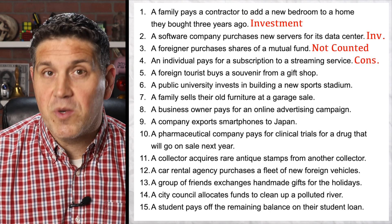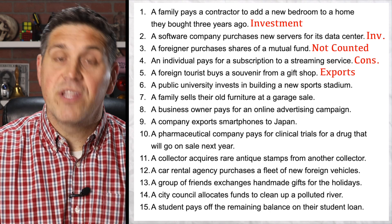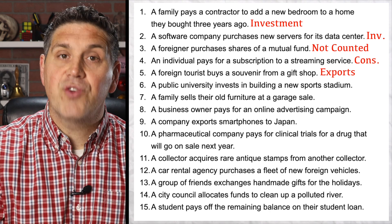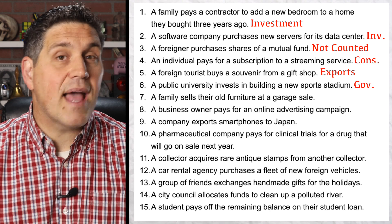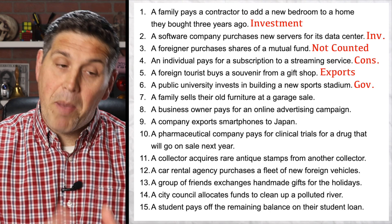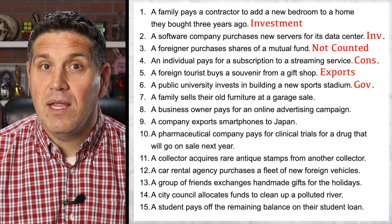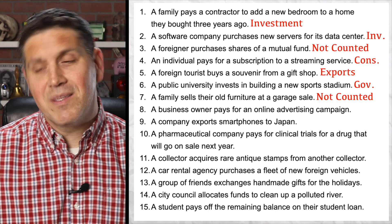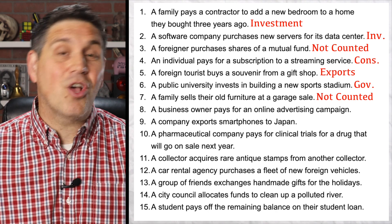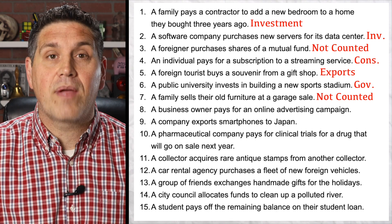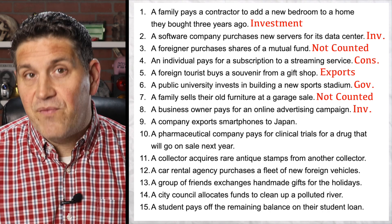Number four counts in GDP as consumer spending. Number five counts in GDP as exports — a foreigner buying stuff in your country that's going back to the other country is an export. Number six counts in GDP as government spending; this is a public university buying a stadium, that's G. Number seven doesn't count towards GDP because it's a garage sale — usually done under the table — and old things don't count in this year's GDP.